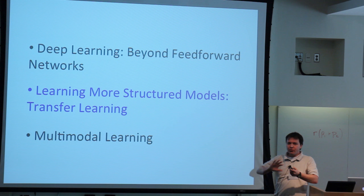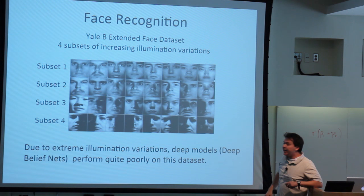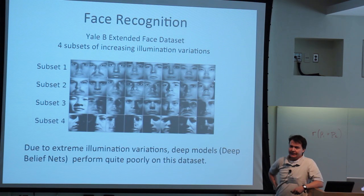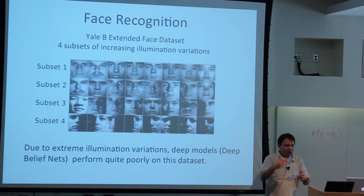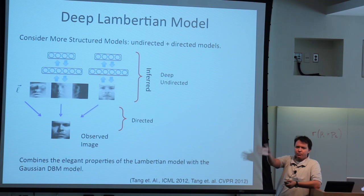There is also a need to go beyond standard feed-forward architectures. For example, if you look at this dataset with extreme illumination variations in faces and feed it to a deep belief network to recognize faces, these models do quite poorly. There is particular structure in faces, and what we'd like to do is extract a more meaningful, illumination-invariant representation — essentially separating shape from shading.